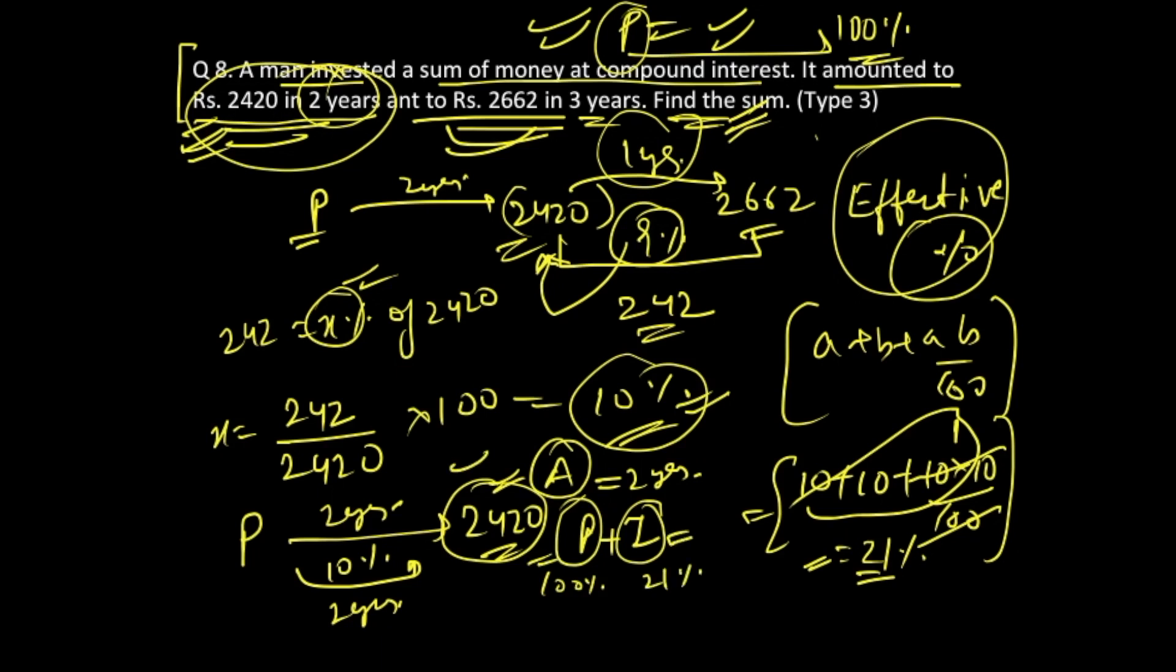So this 100 plus 21, that is 121 percent, that is your amount value is 2420. This is known to you. Right? And all you have to find out is the final sum, that is the 100 percent value.